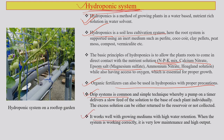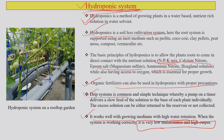Hydroponics works well with different growing media with high water retention. When the system is working correctly, it is a very low-maintenance, high-output system, which is why hydroponics is getting increasing popularity across the world, especially in areas or countries where water availability is a big issue. Hydroponics is a futuristic technology already present in India and could be an alternative answer to water scarcity situations which some parts of the world are already facing.